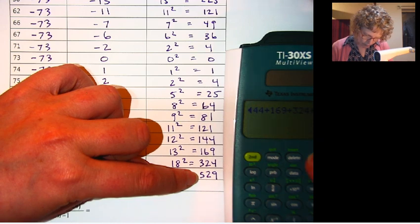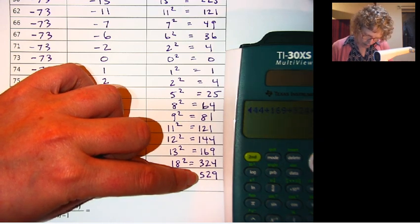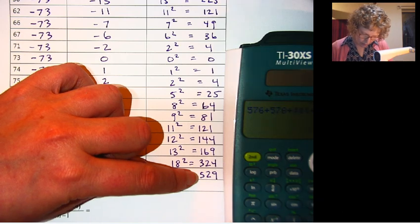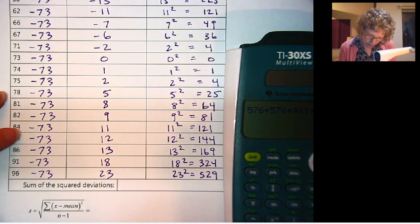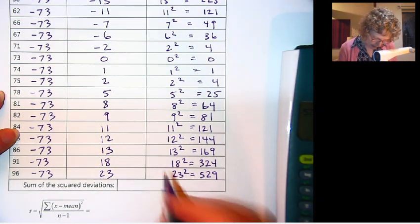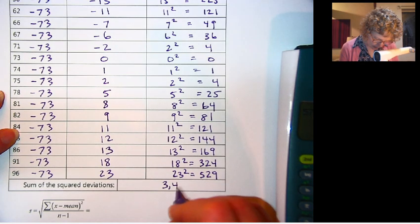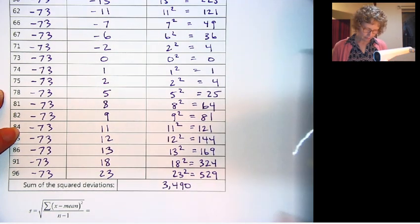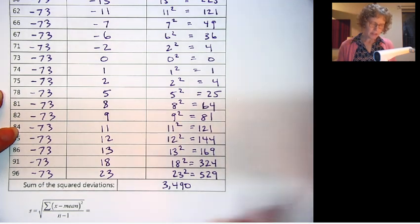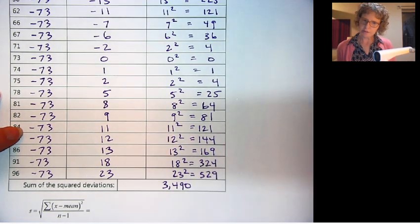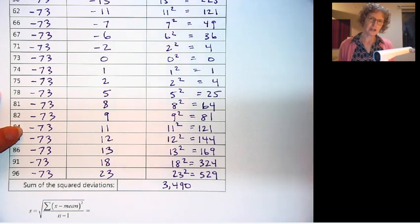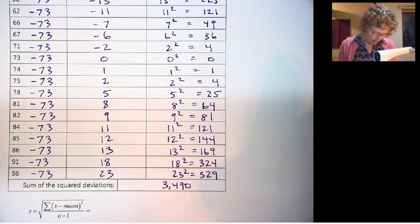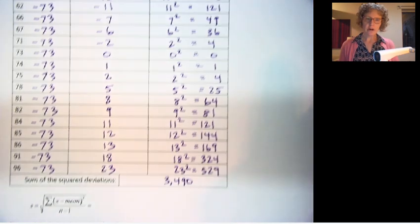Let's add all these up. I got 3490. Can't really put units on here because we've just squared everything. So this number would be in terms of points squared, but that doesn't really mean anything. So let's keep going with our formula.